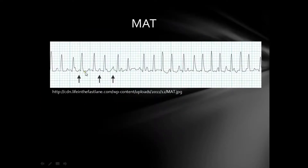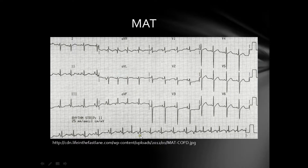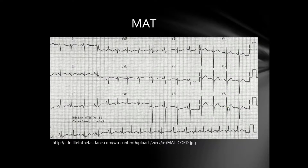This is a typical example of multifocal atrial tachycardia. First, it's an irregularly irregular rhythm with changeable RR intervals. Second, it's a narrow complex tachycardia. Third, there are multiple P wave morphologies preceding each QRS complex. Here's another example of MAT where you can see the different P wave morphologies in lead two, along with signs of right ventricular hypertrophy: the R wave is longer than the S wave in V1 and there are deep S waves in V6 — probably due to cor pulmonale in the setting of severe COPD.